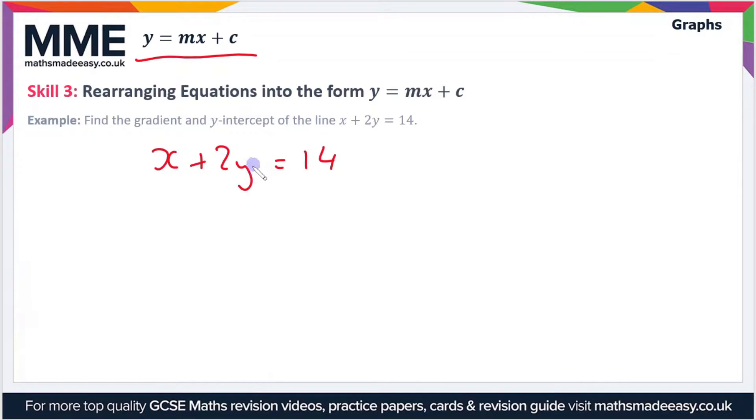In order to make y the subject of the expression, we first have to subtract the x. So it becomes 2y equals minus x plus 14. I could write it as 14 minus x, which is the same thing.